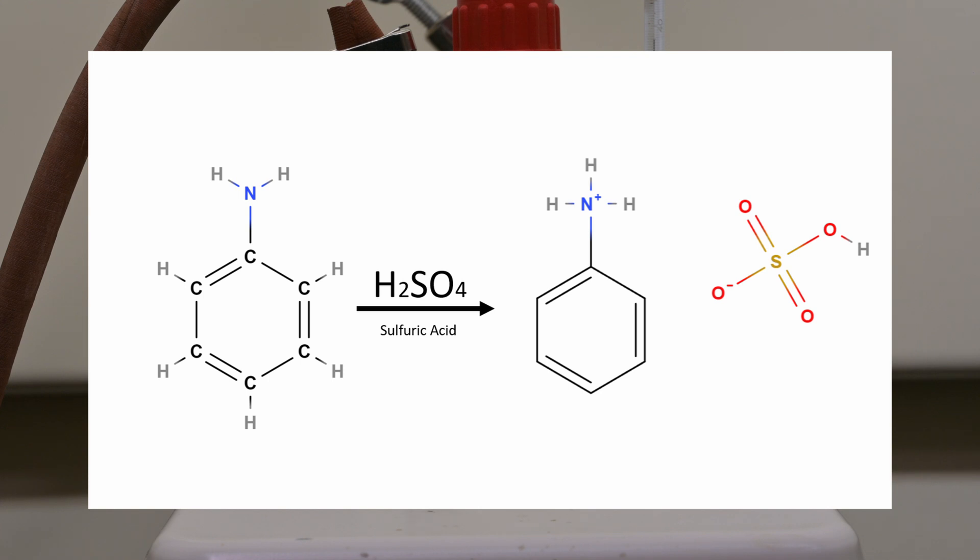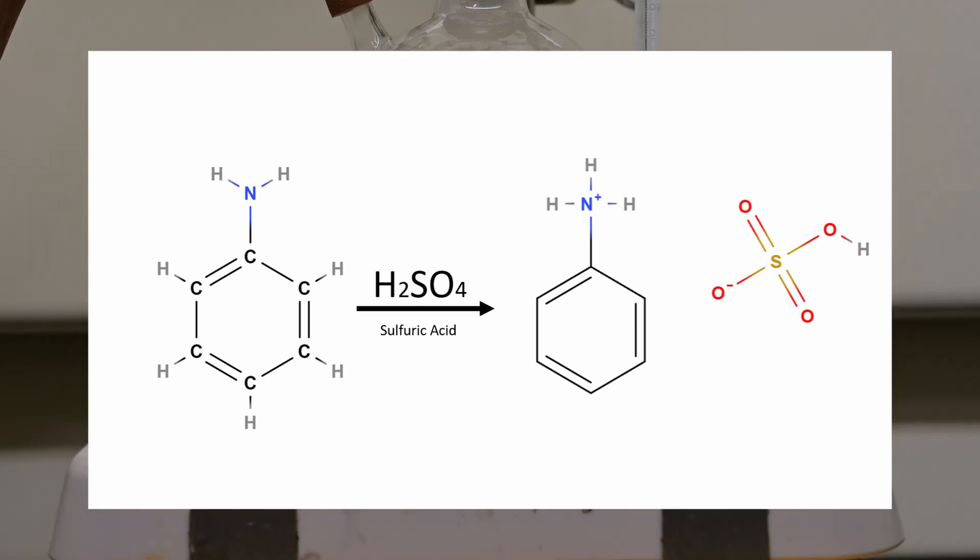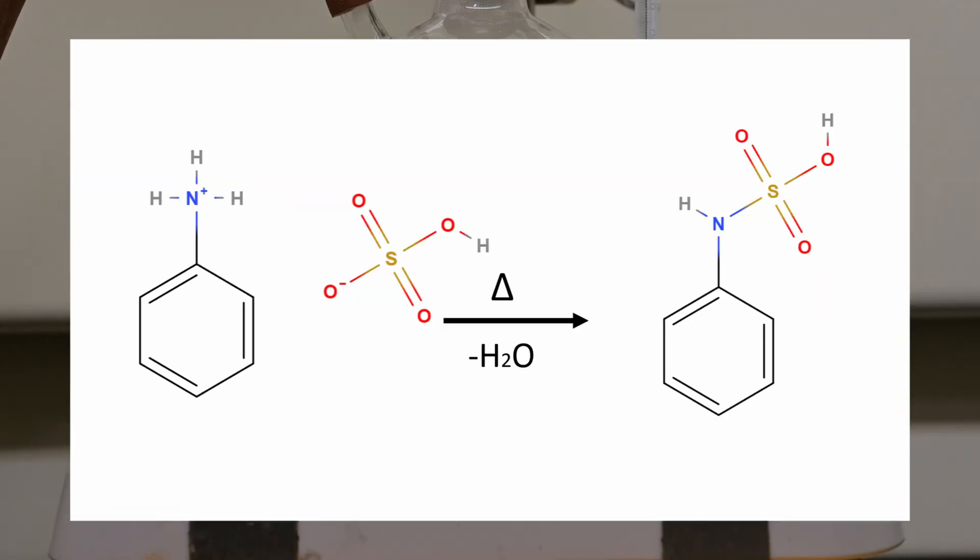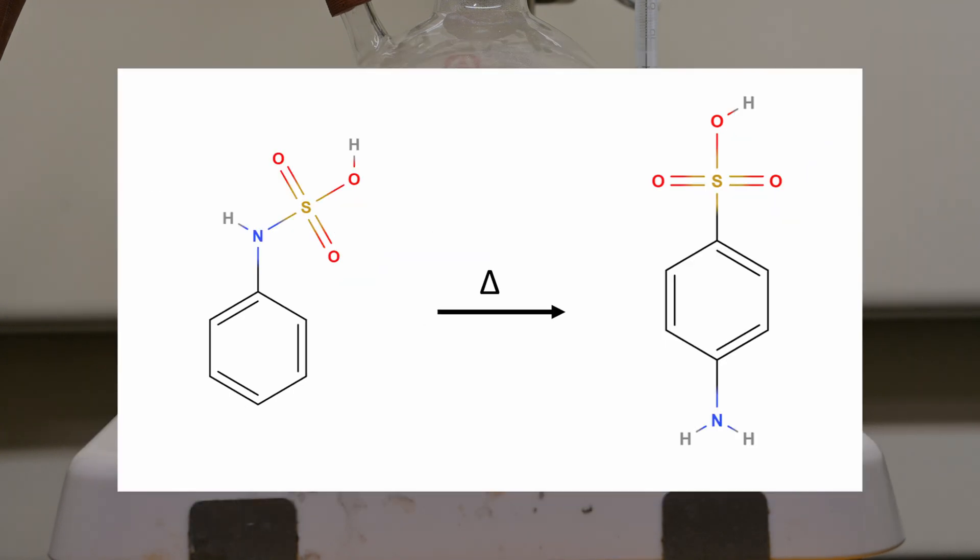During this time aniline reacts with the sulfuric acid to form aniline hydrogen sulfate, which then loses a water group and rearranges to form our target compound, sulfanilic acid.